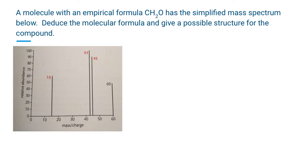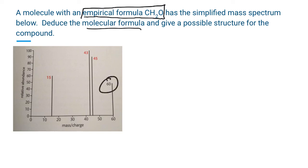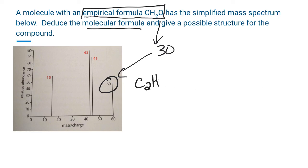The last example is a bit different in terms of wording, but the same approaches apply. The empirical formula is CH2O, we have a simplified mass spectrum, and we need to deduce the molecular formula and give a possible structure. Since the highest peak is at 60, that is the molecular mass. The empirical formula CH2O has a mass of 30 — 12 for carbon, 16 for oxygen, and 2 hydrogens at 1 each. The molecular mass of 60 is double that, so the molecular formula is C2H4O2.